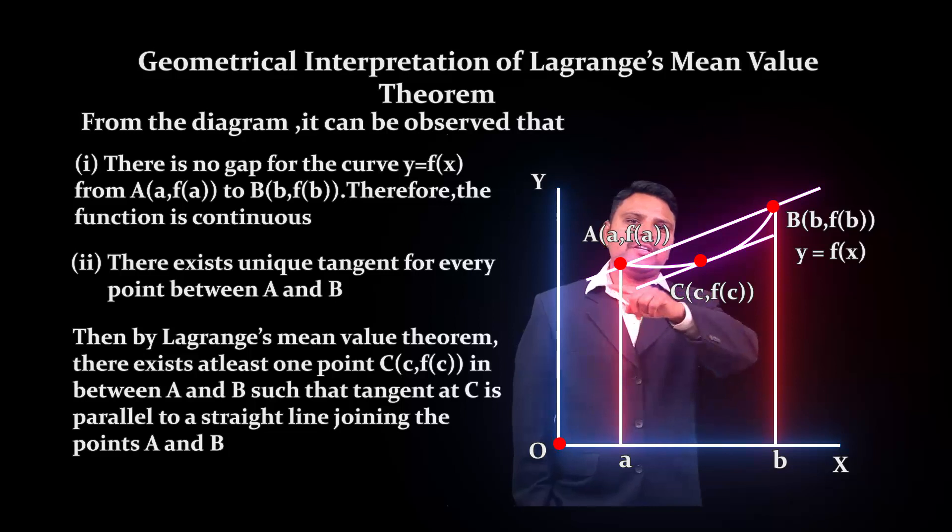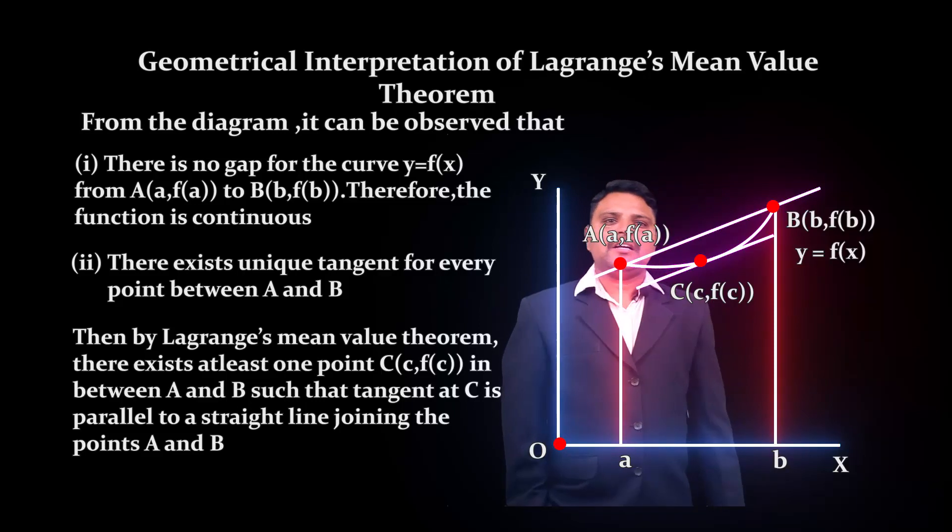This means that f'(c) = [f(b) - f(a)] / (b - a), meaning both lines have the same slope. This is the geometrical interpretation of Lagrange's Mean Value Theorem.